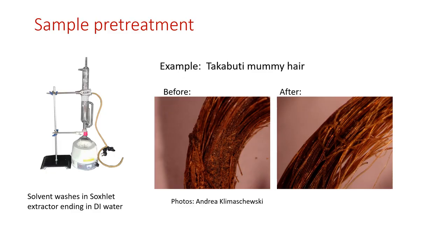The type of sample pretreatment depends on the sample material itself and the potential contaminant. For example, the hair from the Takabuti mummy was covered in a reddish-brown substance, which may have been henna, but we weren't sure it was all henna and therefore contemporary. So this hair was put into what is called a Soxhlet extractor, various solvents were rinsed through it, and then finally it was rinsed in deionized water. Here are some before and after pictures of the hair.